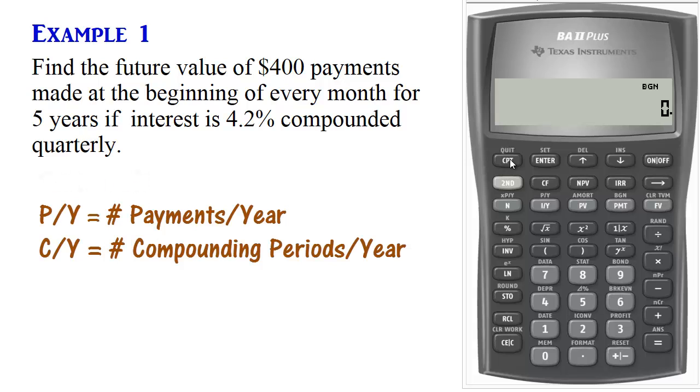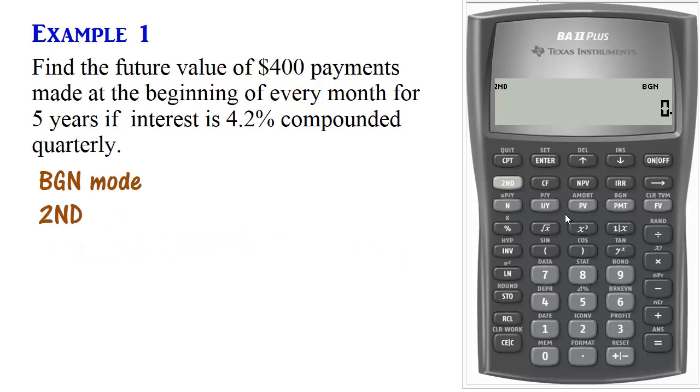Next we set P/Y and C/Y. We do that by pressing 2nd, P/Y. In this question, payments are made every month, so we set P/Y to 12. Enter, scroll down, and interest is compounded quarterly. We set C/Y to 4. Enter, and then 2nd, Quit.